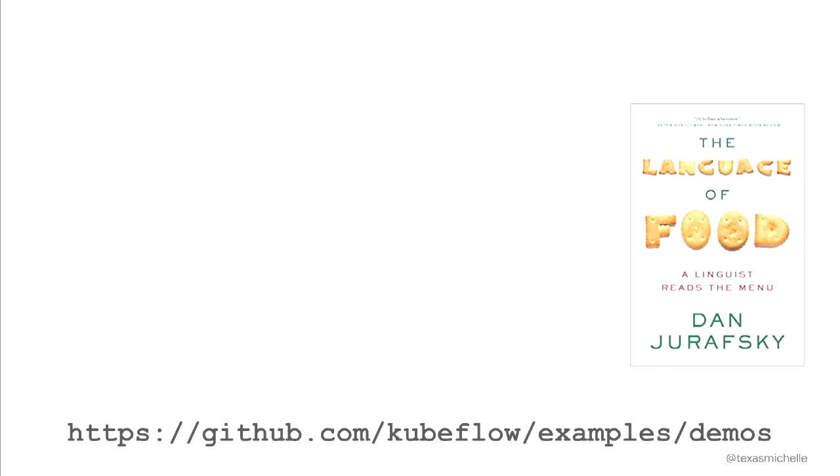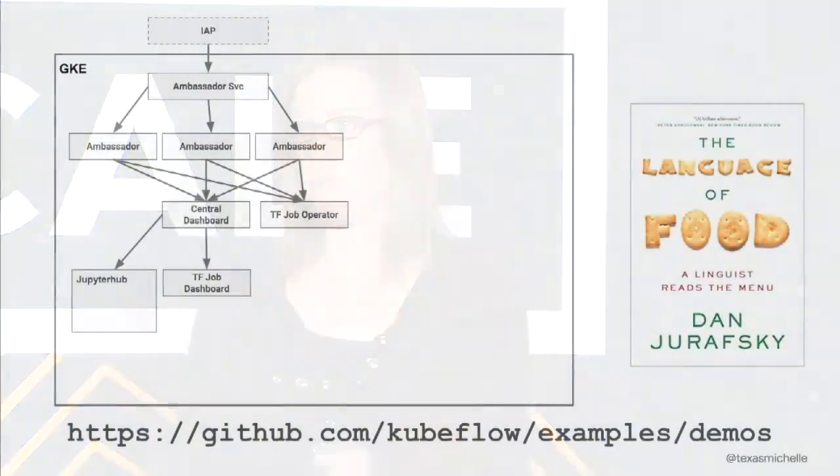Let's move into a quick demo. The idea comes from one of my favorite NLP researchers, Dan Draftski — a very approachable book if you're interested in linguistics. He's done sophisticated research around the language behind food. Our demo is a straightforward two-point sentiment analysis on Yelp restaurant reviews: we take a review and determine whether it's positive or negative. We'll start by installing Kubeflow locally, then kick off training using Tensor2Tensor, which is a library of pre-configured models.